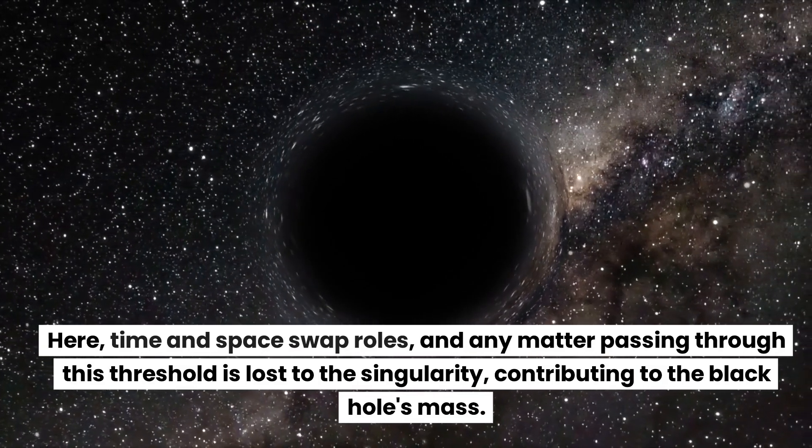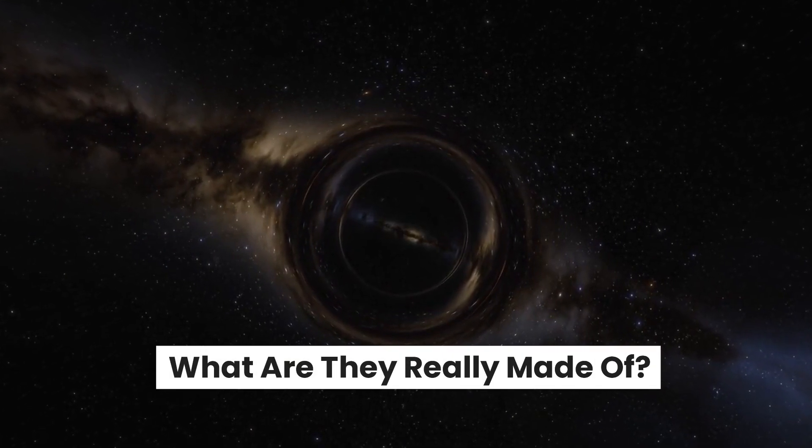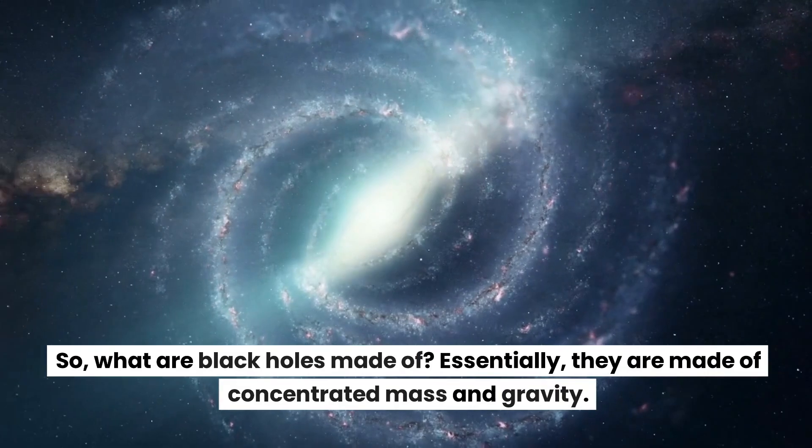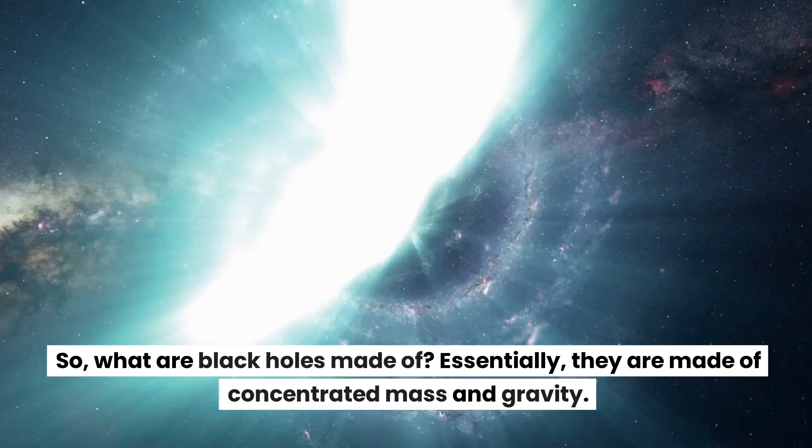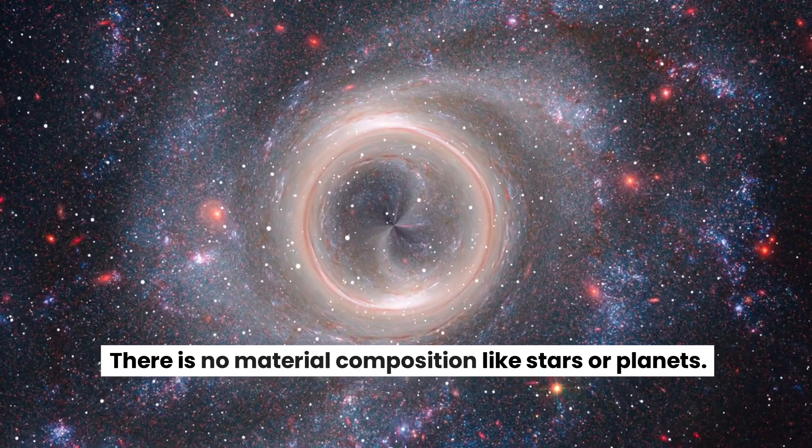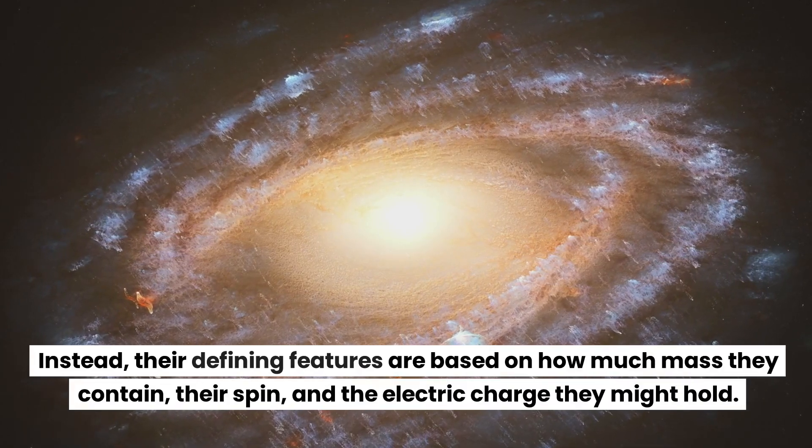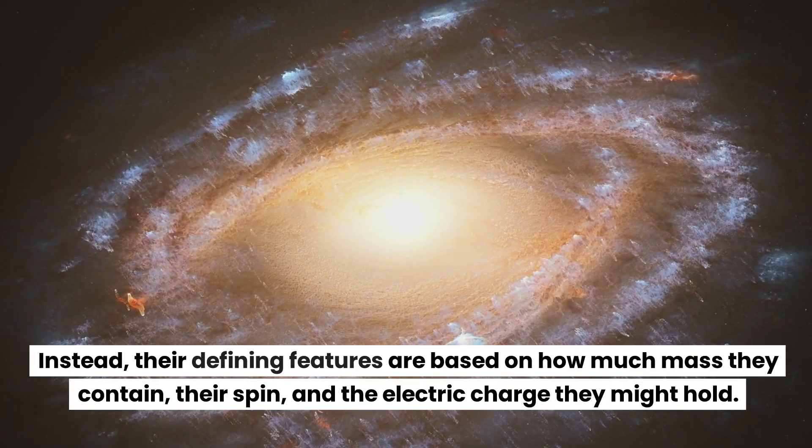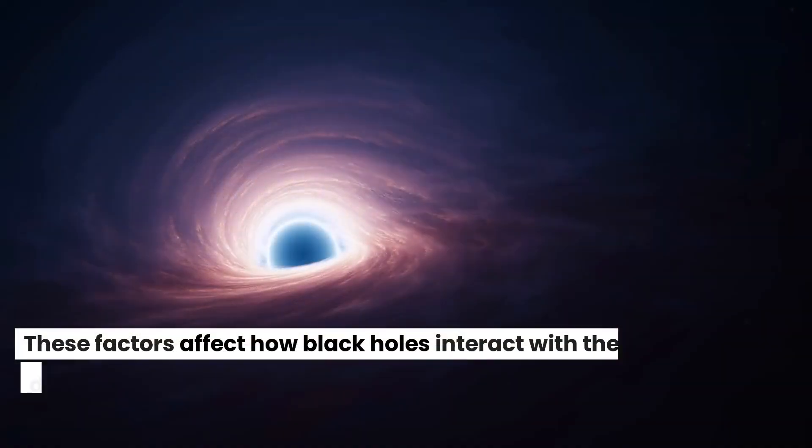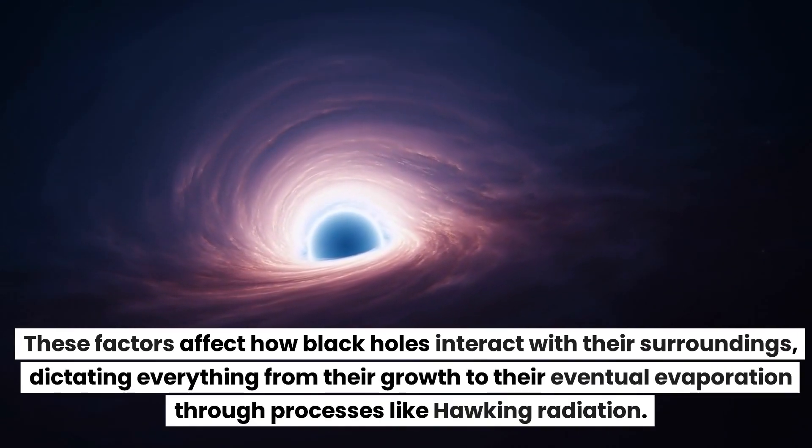What are they really made of? So what are black holes made of? Essentially, they are made of concentrated mass and gravity. There is no material composition like stars or planets. Instead, their defining features are based on how much mass they contain, their spin, and the electric charge they might hold. These factors affect how black holes interact with their surroundings, dictating everything from their growth to their eventual evaporation through processes like Hawking radiation.